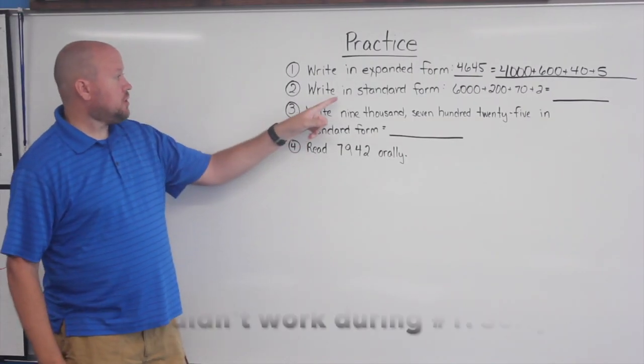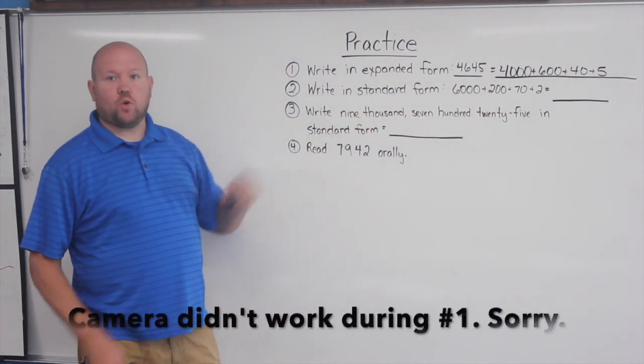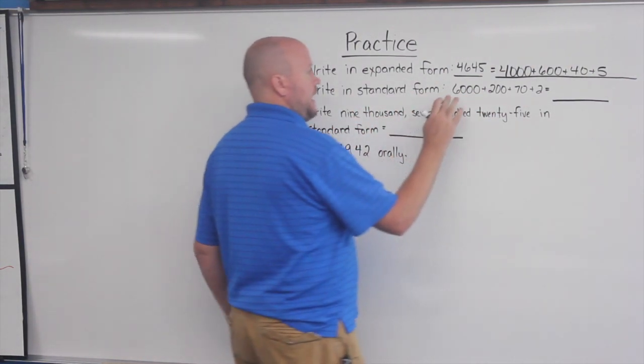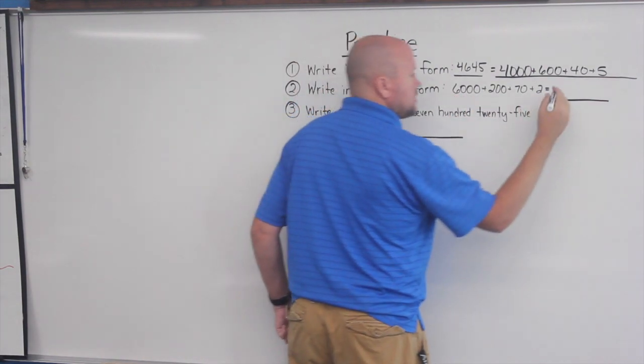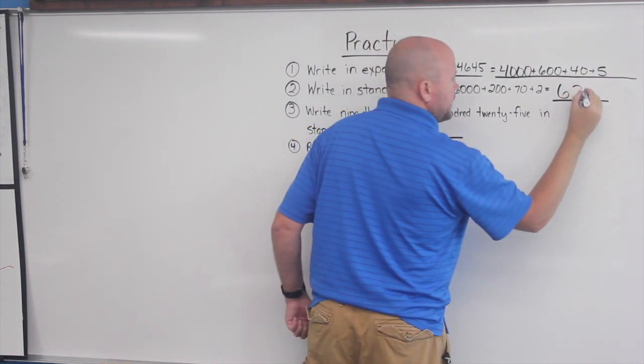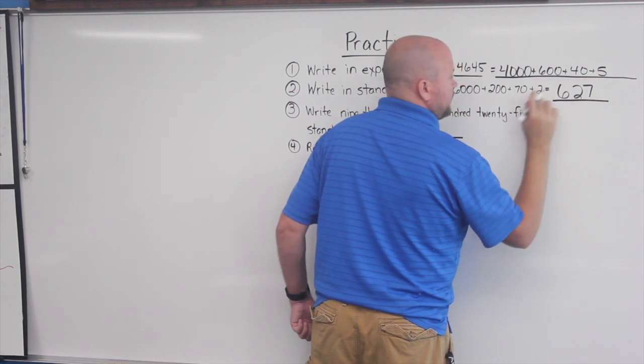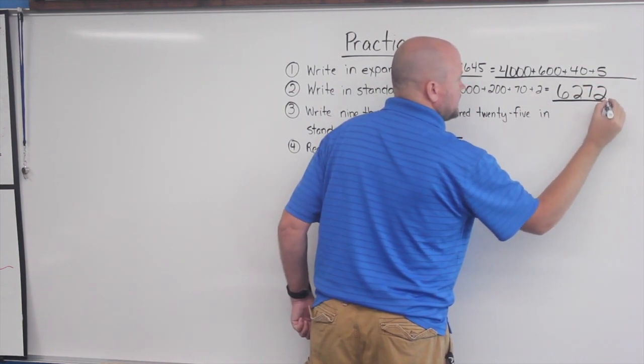For number two, we are supposed to take this expanded form number and write it in standard form. On this one, we have a six in the thousands place, a two in the hundreds place, a seven in the tens place, and a two in the ones place.